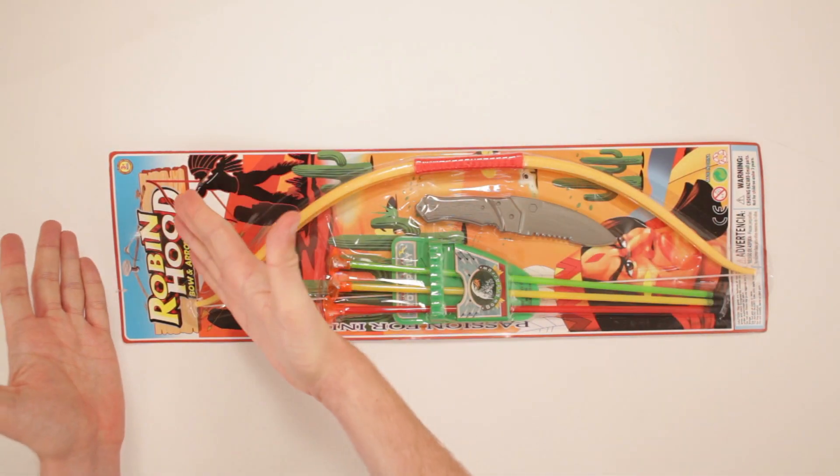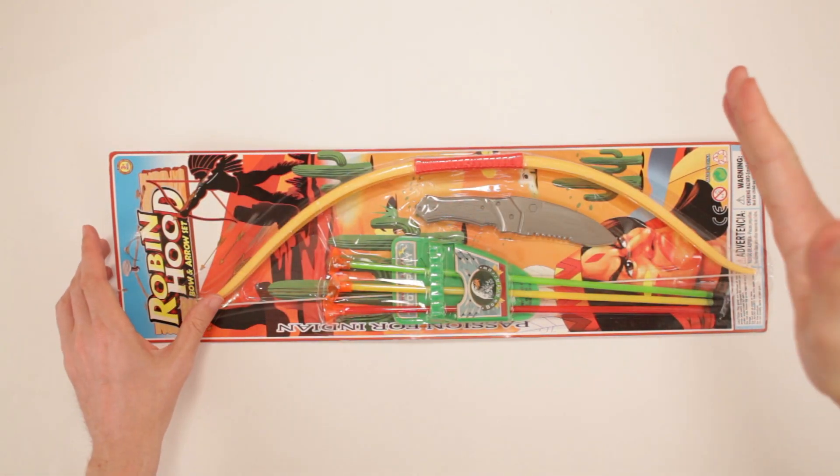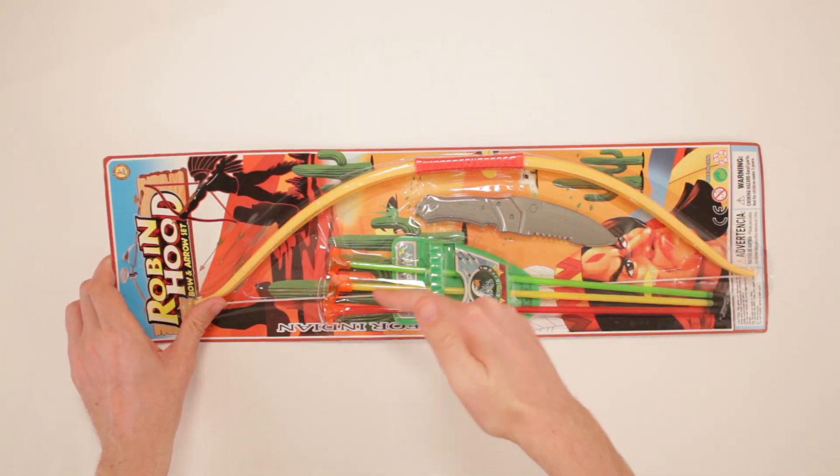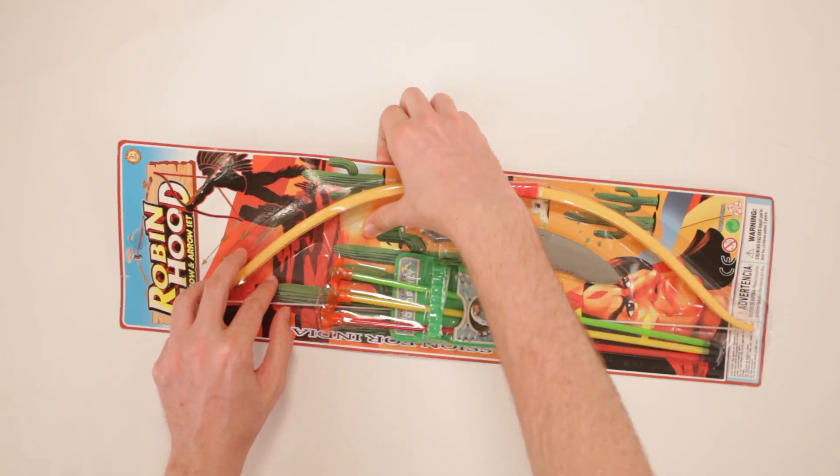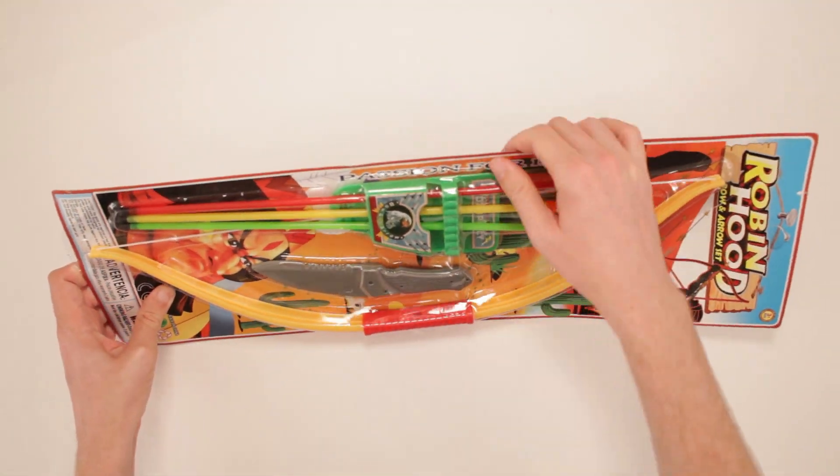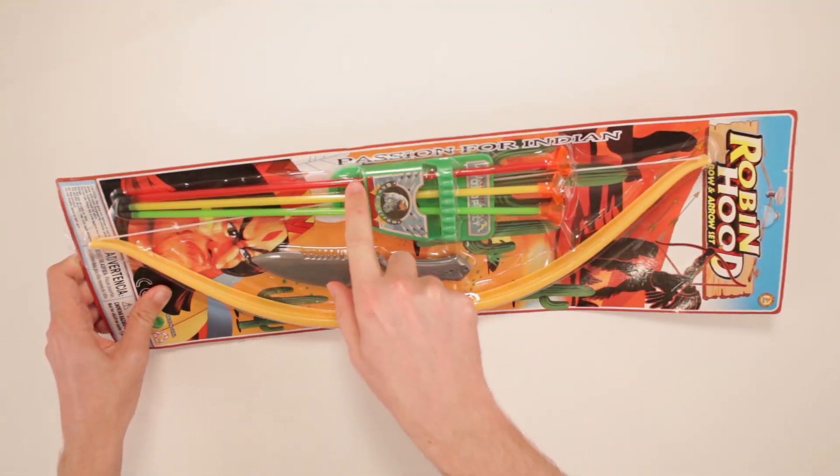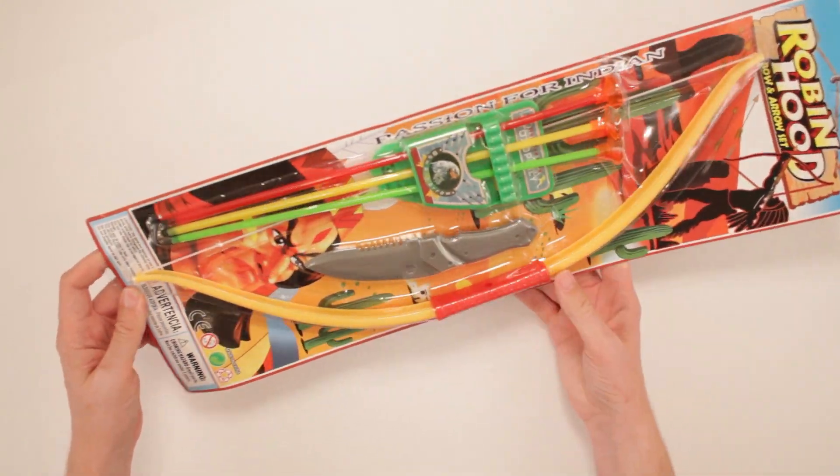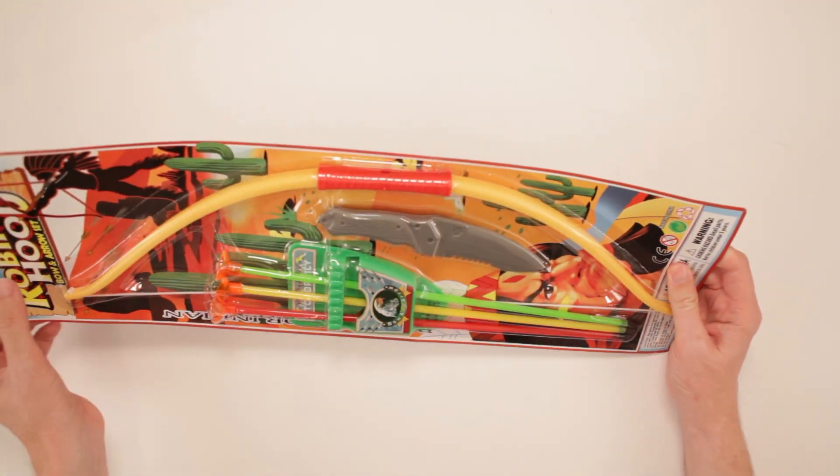This is Robin Hood bow and arrow set. I don't know about you, but I have passion for Indian. It says that. Those aren't my words, it's theirs. It says it. Passion for Indian. I don't know why it says that, but I guess it's got a passion for Indian.